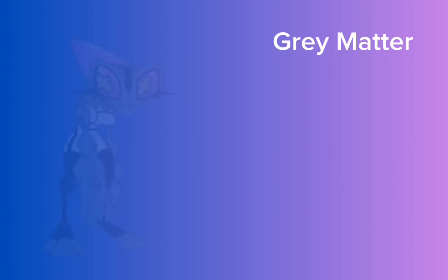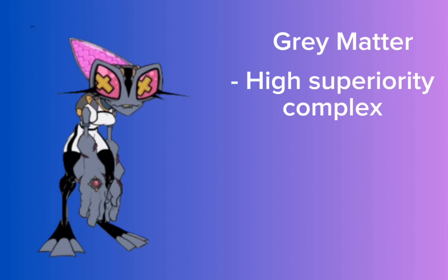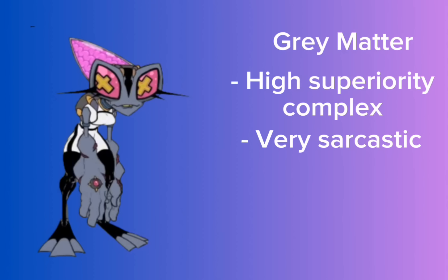Next is Grey Matter, and I do kind of like the aspect of her having this brain bubble thing that's encased in glass — I think that's pretty interesting. I also really like her eyes as well. Apparently she has a very high superiority complex, which if she's anywhere close to this world's version of Azmuth, yeah, that makes a lot of sense. Also, she's very sarcastic — the comics connected to this showcase it so well, because she is incredibly sarcastic, especially to Azmuth, and I love it.